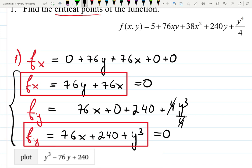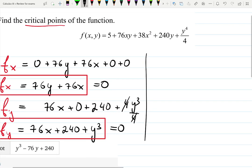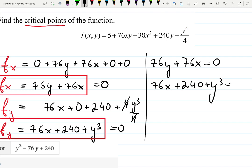And there are many ways to do that. We were teaching you how to do elimination method or substitution method. And in this case I will just subtract one equation from another one. So 76y plus 76x equals to 0. 76x plus 240 plus y³ equals to 0.